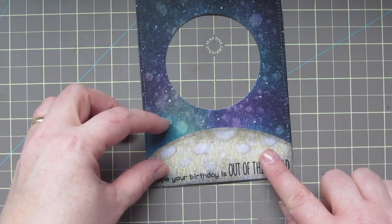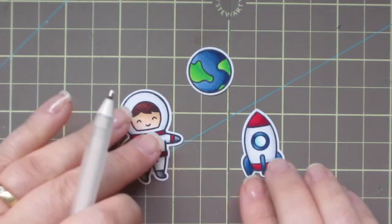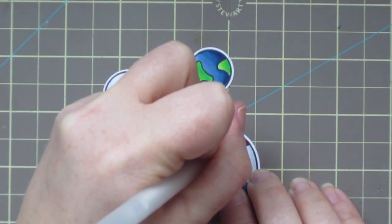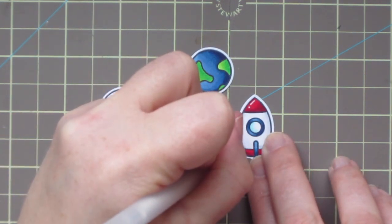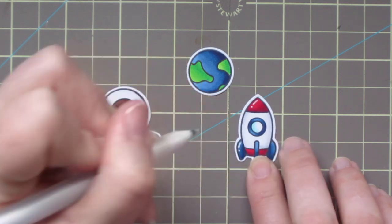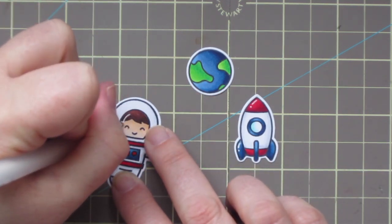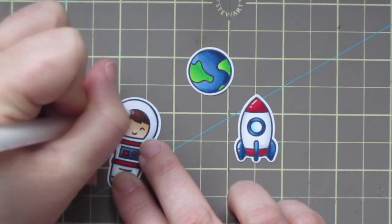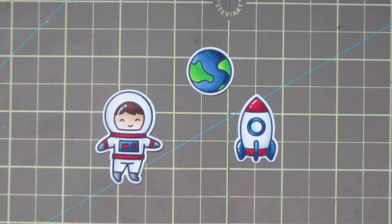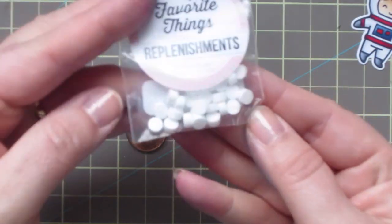I'll take my Sakura White Glaze Pen and just add a little bit of shine detail to my rocket, and also to my little astronaut boy. I'm going to add that right over top of his face, which is a little bit scary, but it does make it look like there's glass there. And then I'll just set those guys aside for a second while I assemble our slider mechanism.